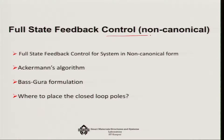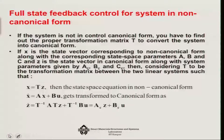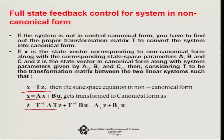How does this work in non-canonical form? If the system is in non-canonical form, we must transform it into canonical form. If a transformation matrix T exists, then x-dot equals Ax plus Bu becomes z-dot equals T-inverse A T times z plus T-inverse B times u, which is the control canonical form: A_c z plus B_c u. We must first convert the system into canonical form.